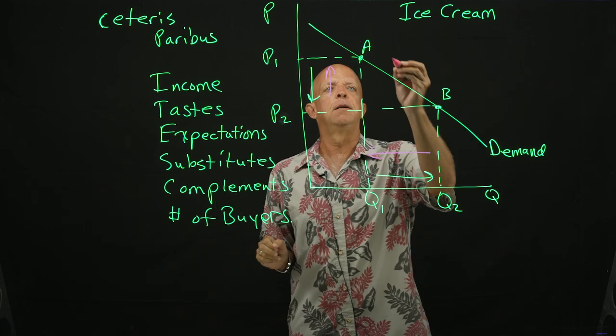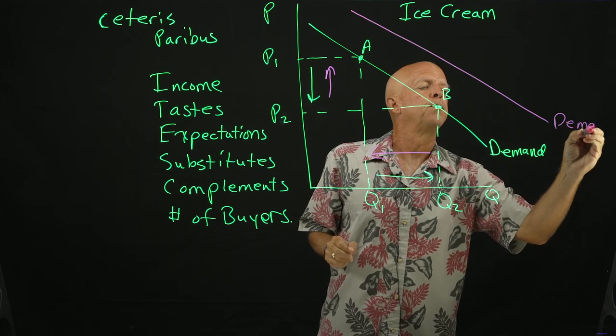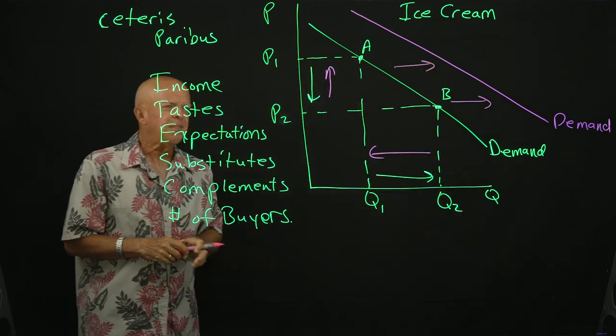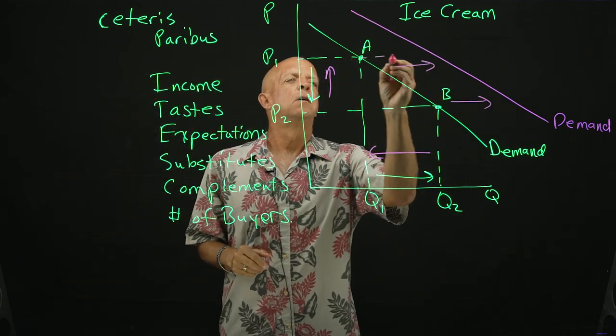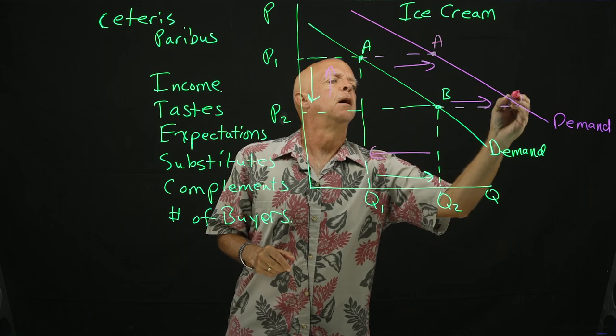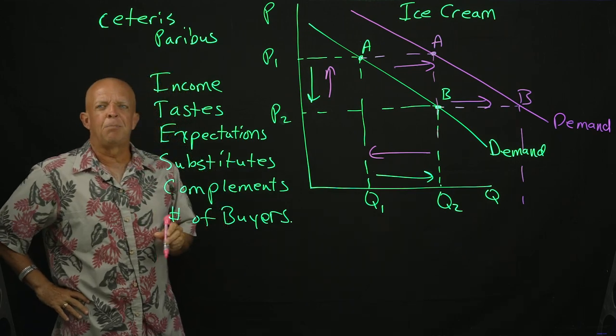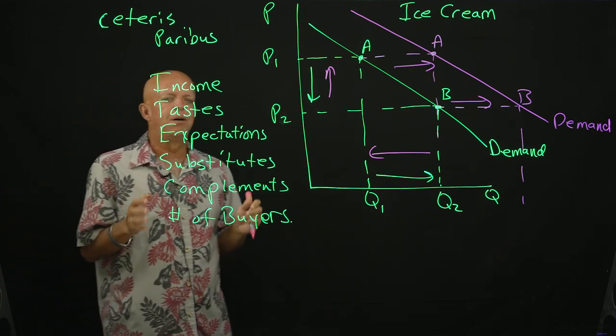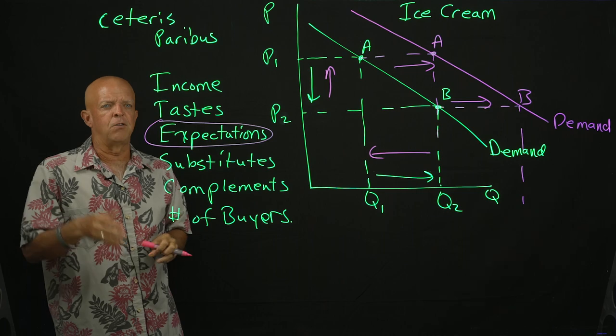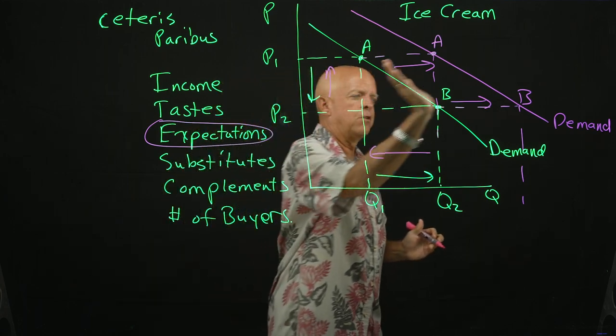A hurricane happens and we would show this as a shift to the right of the demand curve. And that shift to the right means that at every price, the consumer is going to buy more than before because of this thing right here. And expectations, it could be taste, it could be income, substitutes, compliments, and so forth. So that's going to be a shift to the right.